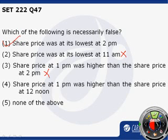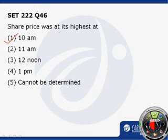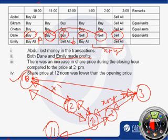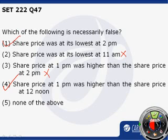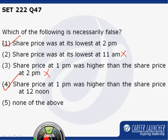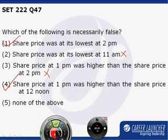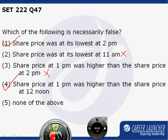The fourth option says the share price at 1 p.m. was higher than the share price at 12 noon. Is 1 p.m. greater than 12 noon? No, definitely not. We have already asserted that the price at 1 p.m. has to be lower than the share price at 12 noon. Hence statement 4 is also necessarily false. In this question both option 1 and option 4 are correct — both options fetch you good marks as far as CAT is concerned.